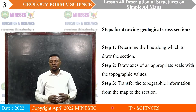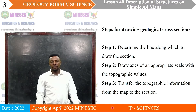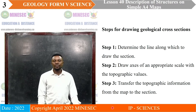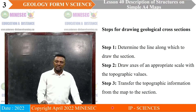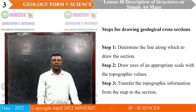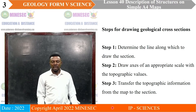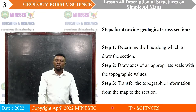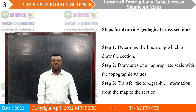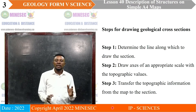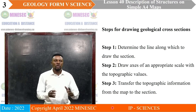You are told to draw a geologic section along line A to B, or it can be drawn on the map and you are told to draw your section along the line that you have on the map. The next step will be to draw axes of an appropriate scale with the topographic values — you will come out with your vertical elevation by looking at your contour values and your scale, from which you can get a good range to use in drawing your section.